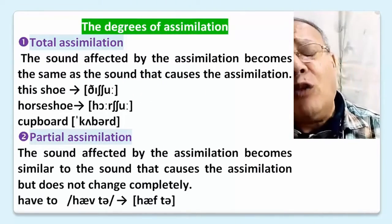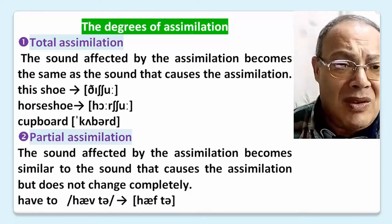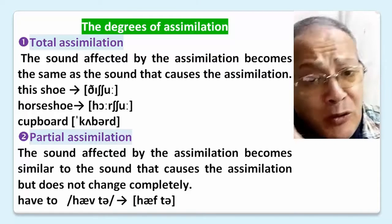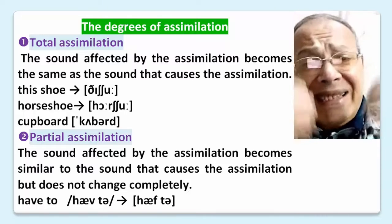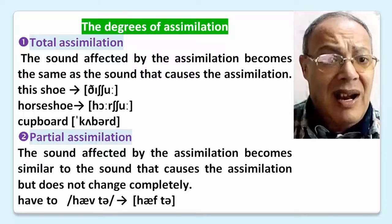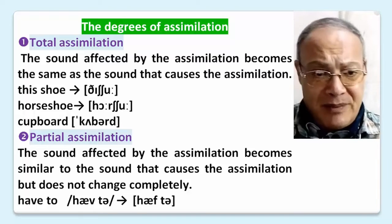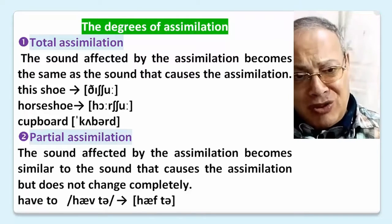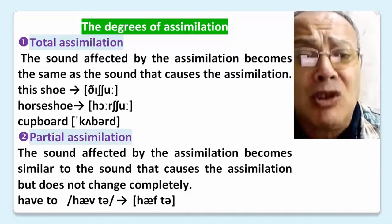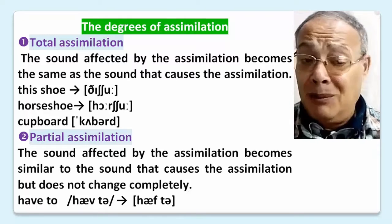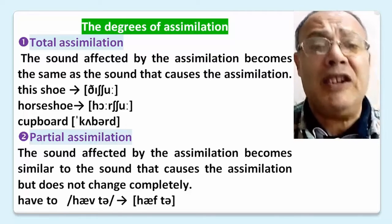The degrees of assimilation. Total assimilation — the sound affected by the assimilation becomes the same as the sound causing it. Partial assimilation — the sound becomes similar to the sound that causes the assimilation but does not change completely. For example, 'I have to.'